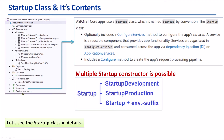The Startup file is one of the most important files in the application. ASP.NET Core apps use a Startup class, which is named Startup by convention. The Startup class optionally includes a ConfigureServices method to configure the app's services. A service is a reusable component that provides app functionality. Services are registered in ConfigureServices and consumed across the app via dependency injection. The Startup class also includes a Configure method to create the app's request processing pipeline. In general, we use a single startup constructor, but in practice multiple startup constructors are possible — for example, Startup Development, Startup Production, Startup Staging.